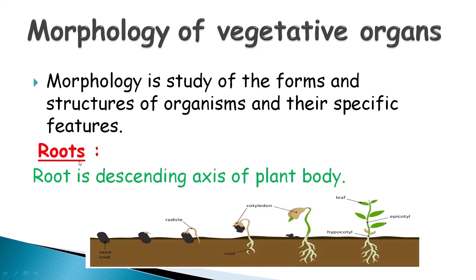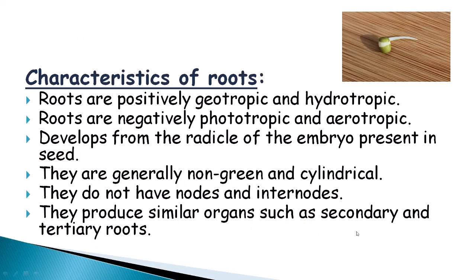The root is the descending axis of the plant body — it goes below the soil. The stem, on the other hand, is the ascending axis of the plant body. What are the characteristics of roots?